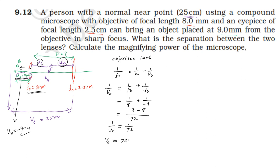Therefore, v0 = 72 mm. This is the image distance for the objective lens. Now we substitute v0 = 72 mm into the next calculation for the eye lens.